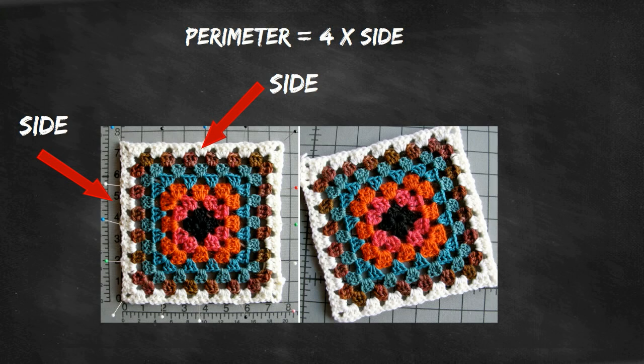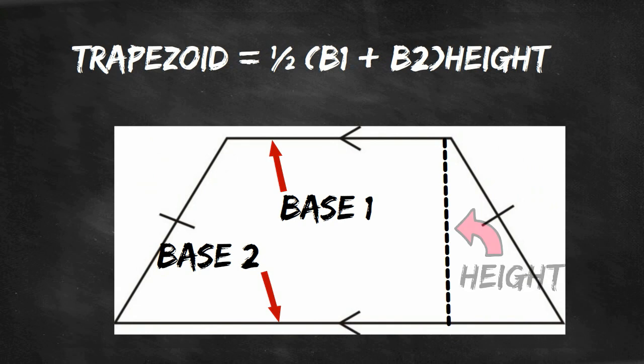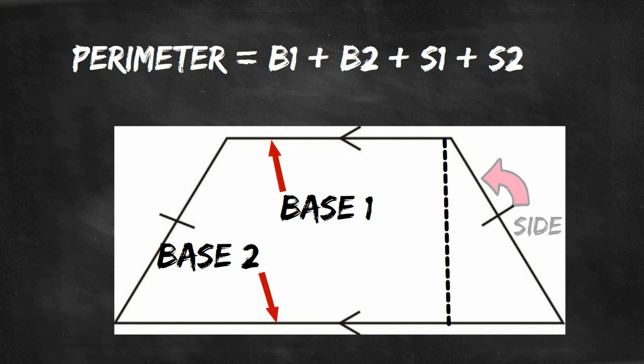The area of a triangle is equal to 1 half base times height. The perimeter is equal to base 1 plus base 2 plus side 1 plus side 2.